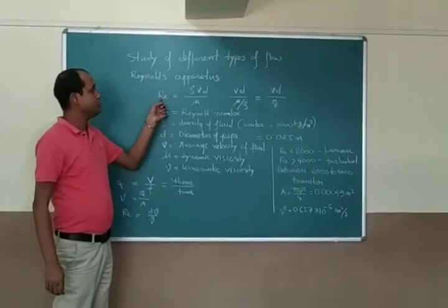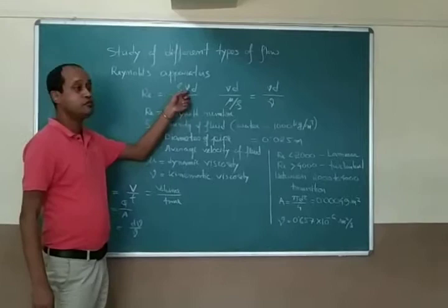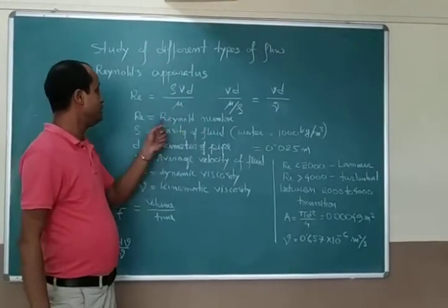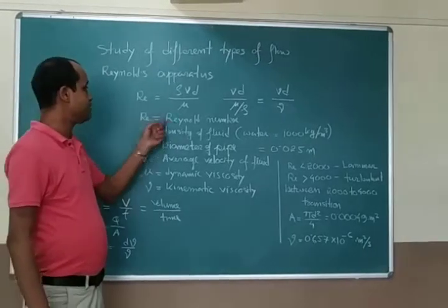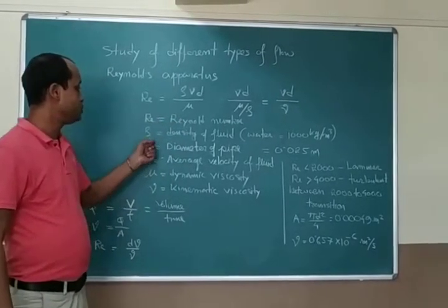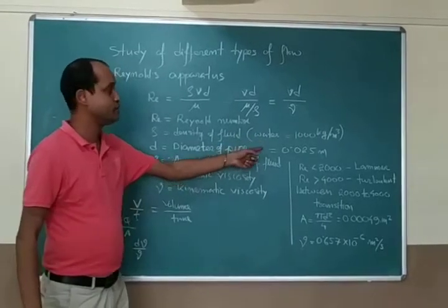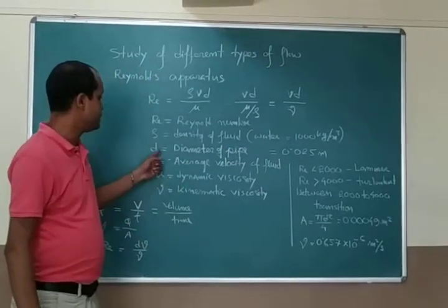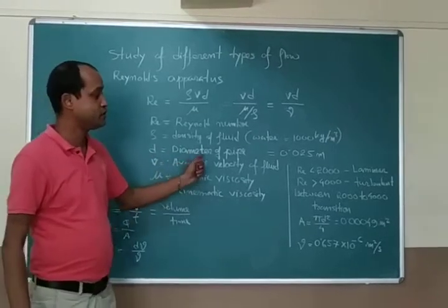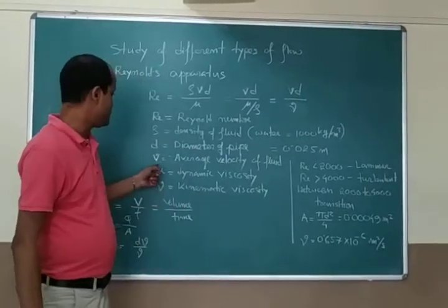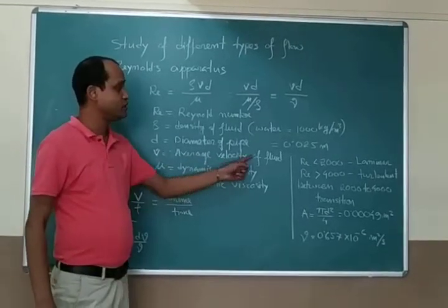Reynolds number is given by rho v d by mu, where Re is Reynolds number, rho is density of the fluid. We are considering water here, so it should be 1000 kg per meter cube. d is the diameter of the pipe which is already given, 0.025 meter.